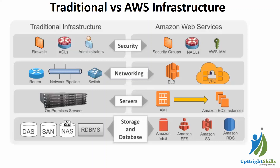An Amazon Machine Image is basically a template which contains an operating system and an application. For example, you can select an AMI with Ubuntu 16.04 plus Tomcat installed and deploy it directly on your instance. You can also create a custom image by deploying an EC2 instance with Ubuntu 16.04, installing your own application, and then creating an image of that instance — which will be private to you. You can also make an AMI public so anyone can use it.